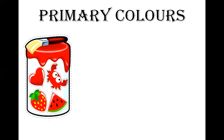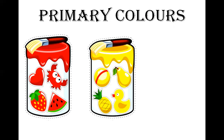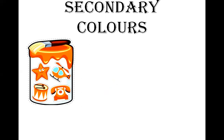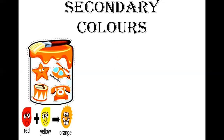Now we are going to learn about primary colors. The three primary colors are red, yellow, and blue. Now for secondary colors — when we mix two primary colors we get a secondary color. For example, orange: by mixing red and yellow we get orange color.